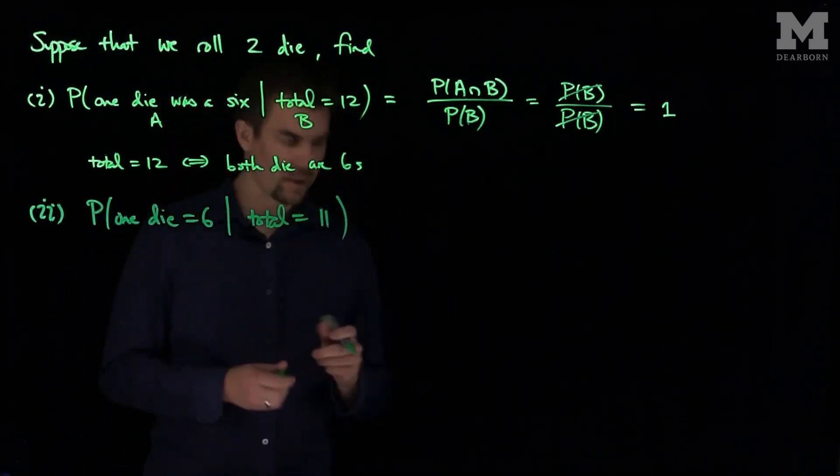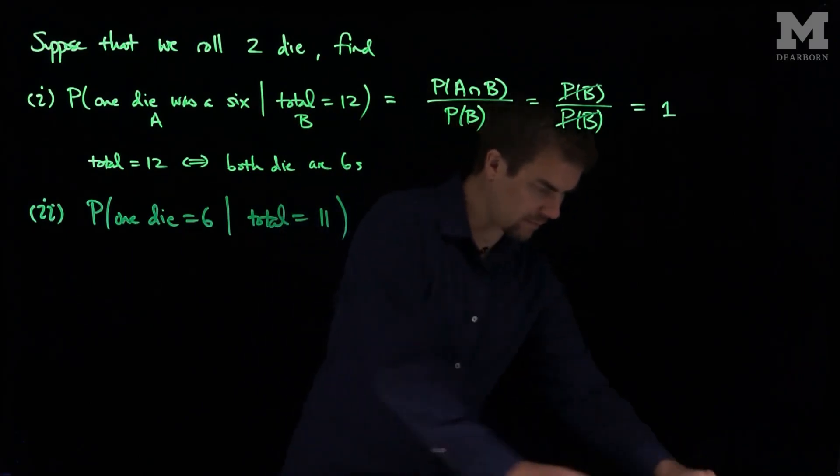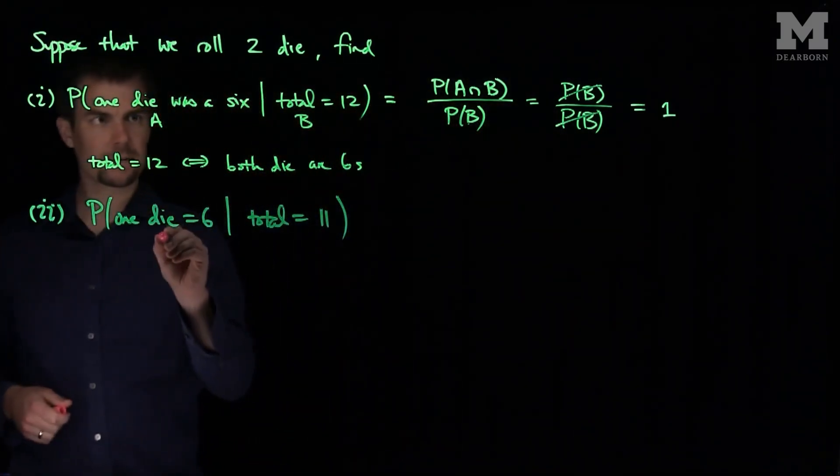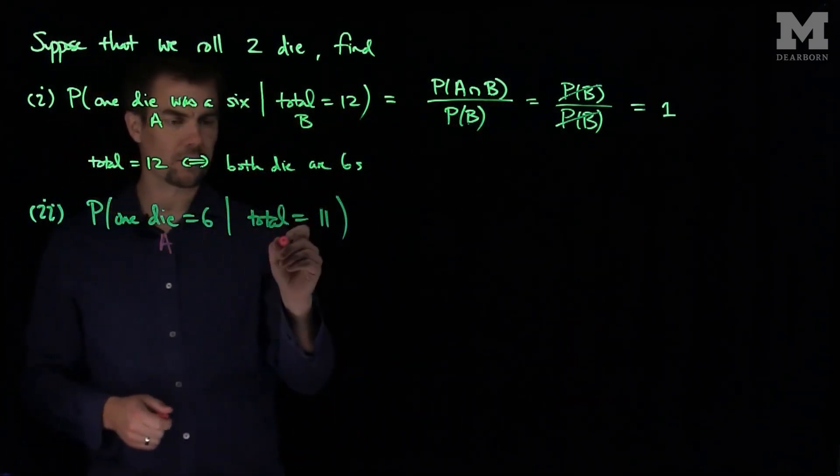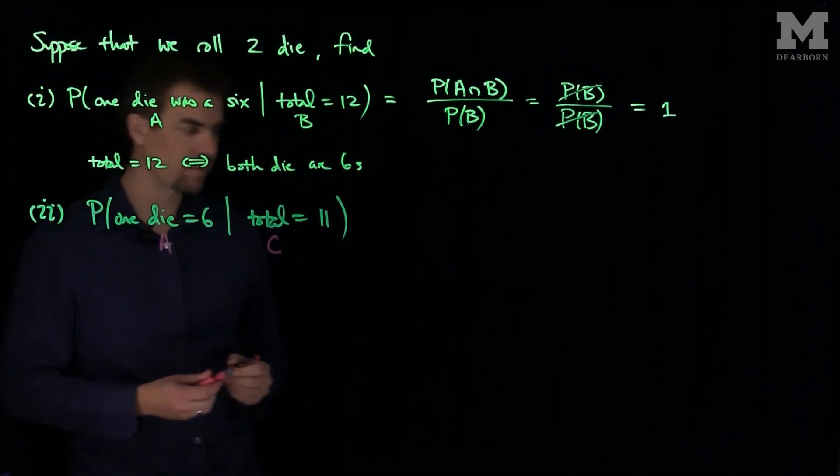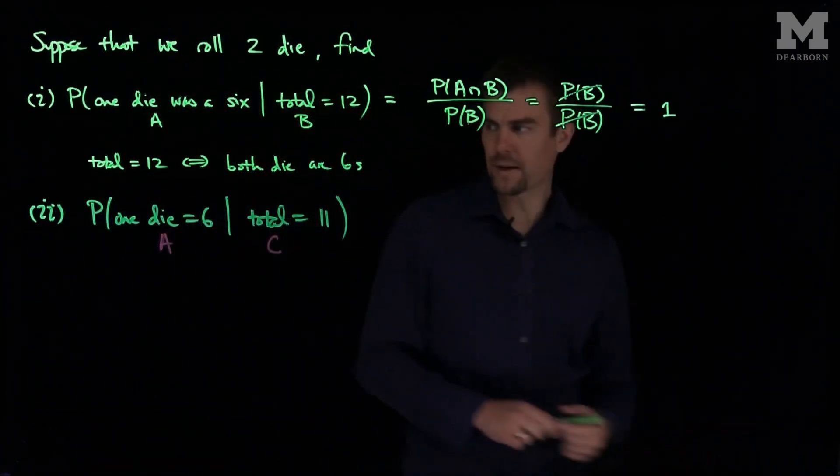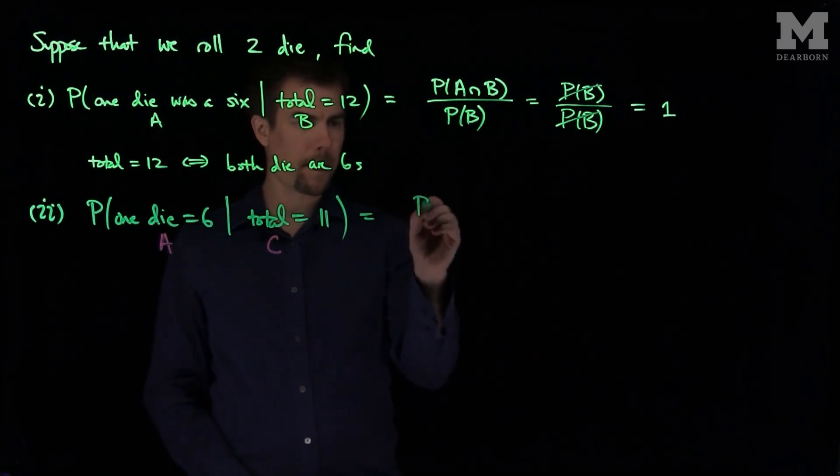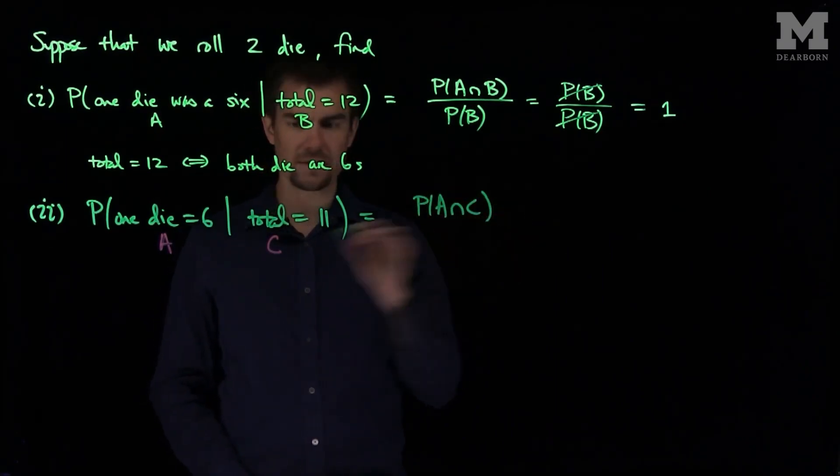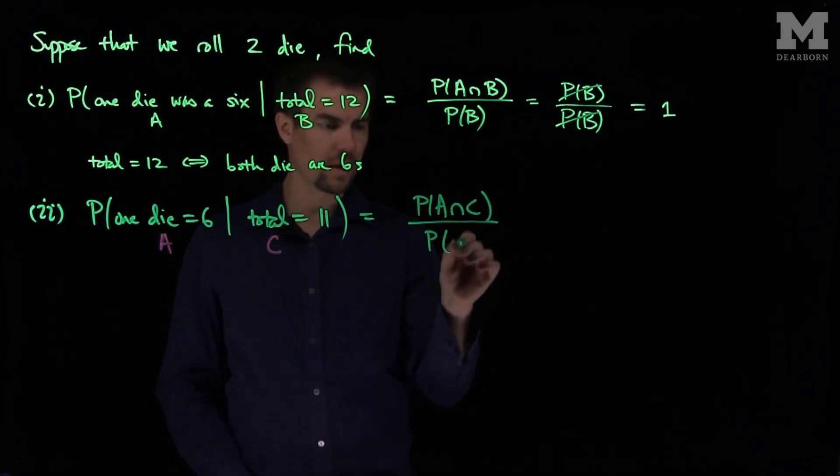Now, by definition, let's call these events something different. So we have our first event over here which is the same as A. And let's call this event over here event C. So by definition, what we have is this is going to be the probability of A intersect C divided by the probability of C.